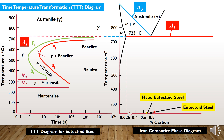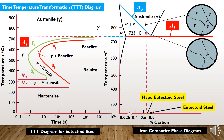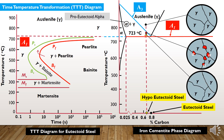Now let's consider a composition to the left of eutectoid, which is termed as hypo-eutectoid. Its microstructure above the upper critical temperature would consist entirely of grains of gamma phase. Just below the upper critical temperature, we would reach the alpha plus gamma region, so small particles of alpha would start precipitating out along the original grain boundaries — this is known as pro-eutectoid alpha phase.